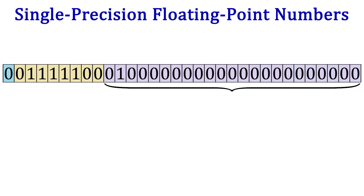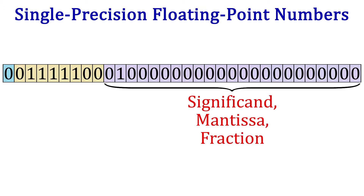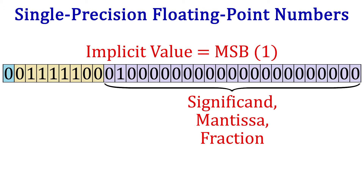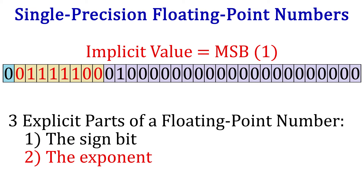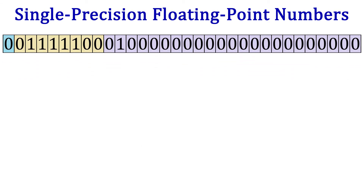The last 23 bits are what is known as the significand, the mantissa, or the fractional part of the number. The magnitude of the number stored is actually 24 bits because the implicit part is the most significant bit, which in binary is always a one. Remember how we never use zero as the digit to the left of the decimal in scientific notation? In binary, the only other choice is one. So all numbers in binary scientific notation start with one. The three explicit parts of any floating point number are the sign bit, the exponent, and the significand. The one implicit part is the one to the left of the decimal point.